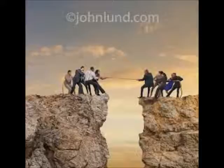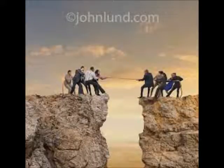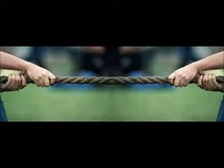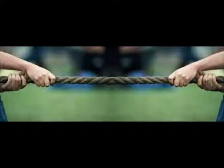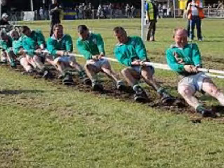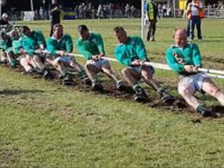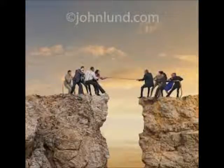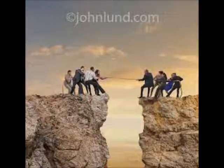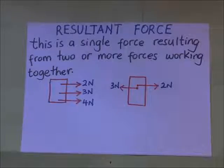We've all heard of this game — Tug of War. Two groups of people pull a rope on both sides, and the group which pulls the rope to their side is the winner. In order to win, the group has to overcome the force on the opponent's side. This means the rope experiences two forces acting in opposite directions, but eventually moves in one direction. The force by which the rope moves in that single direction, in spite of the two forces acting on it, is what we call the resultant force.